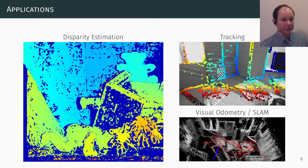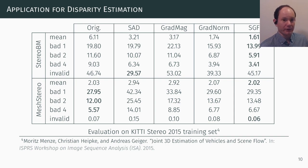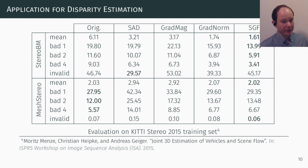We applied our gradient-based measure to disparity and depth estimation as well as visual odometry. For disparity estimation, we integrated our measure and other gradient-based measures — sum of absolute differences (SAD), absolute difference of gradient magnitude (GRATMAG), and the norm of the gradients difference (GRATNORM) — into mesh stereo and OpenCV's stereo block matching.